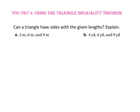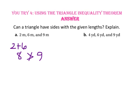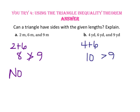Pause the video and do you-try number 4. Can a triangle have sides with the given lengths? In part A, sides 2 meters, 6 meters, and 9 meters: 2 plus 6 equals 8, and 8 is not greater than 9, so no, these cannot be sides of a triangle. In part B, sides 4, 6, and 9: 4 plus 6 equals 10, and 10 is greater than 9, so yes, these three sides can form a triangle.